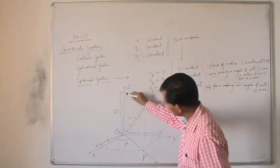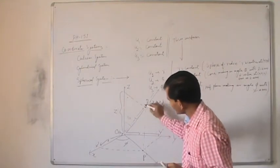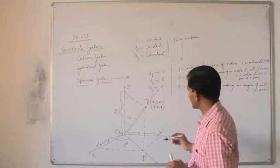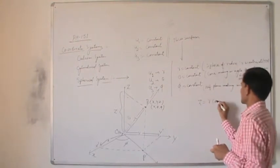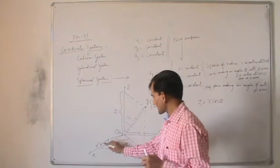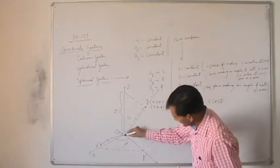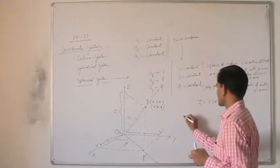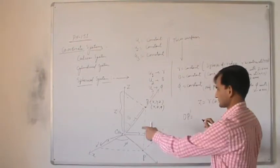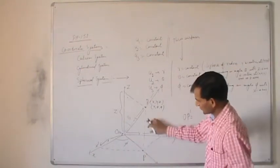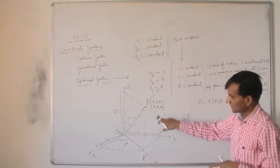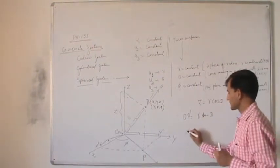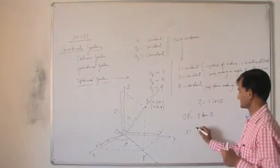From this triangle, what is the value of O-P-prime? This is the projection of R on the horizontal side, so O-P-prime equals R sin theta. Now what is the value of X? X equals O-P-prime times cos phi. And Y equals O-P-prime times sin phi.